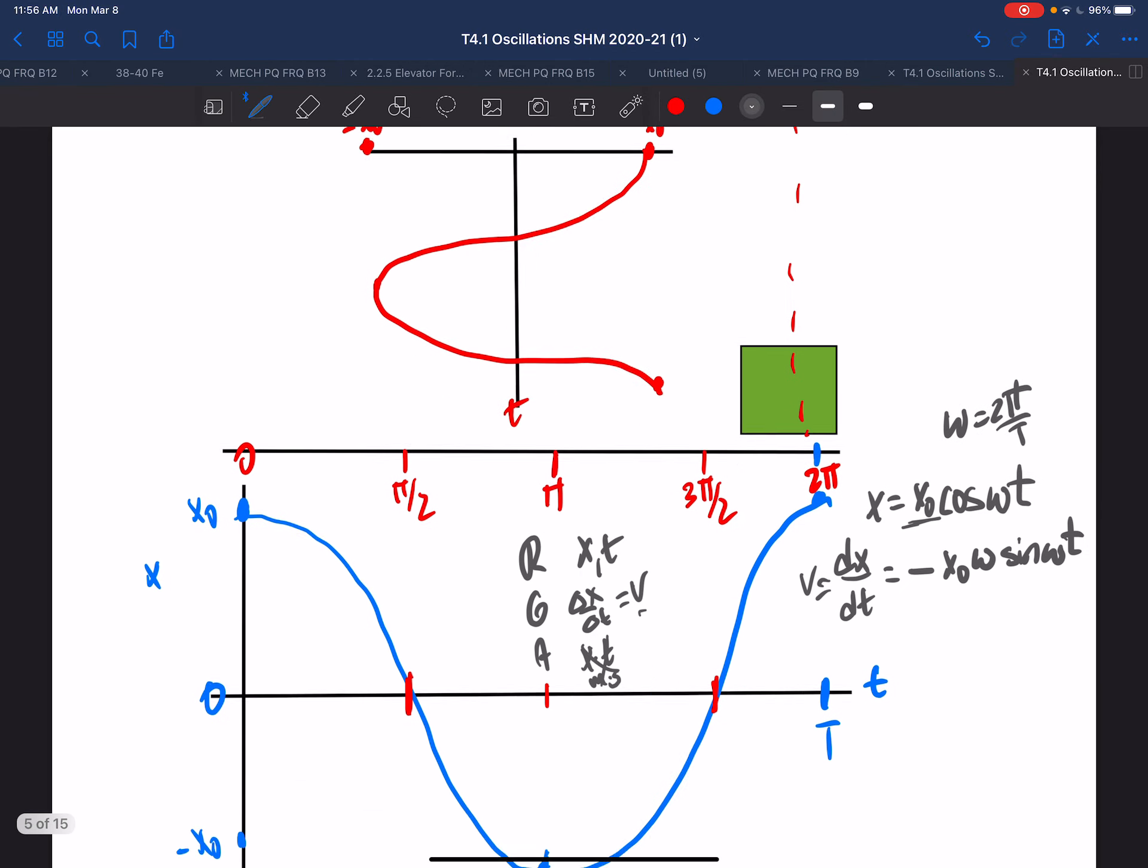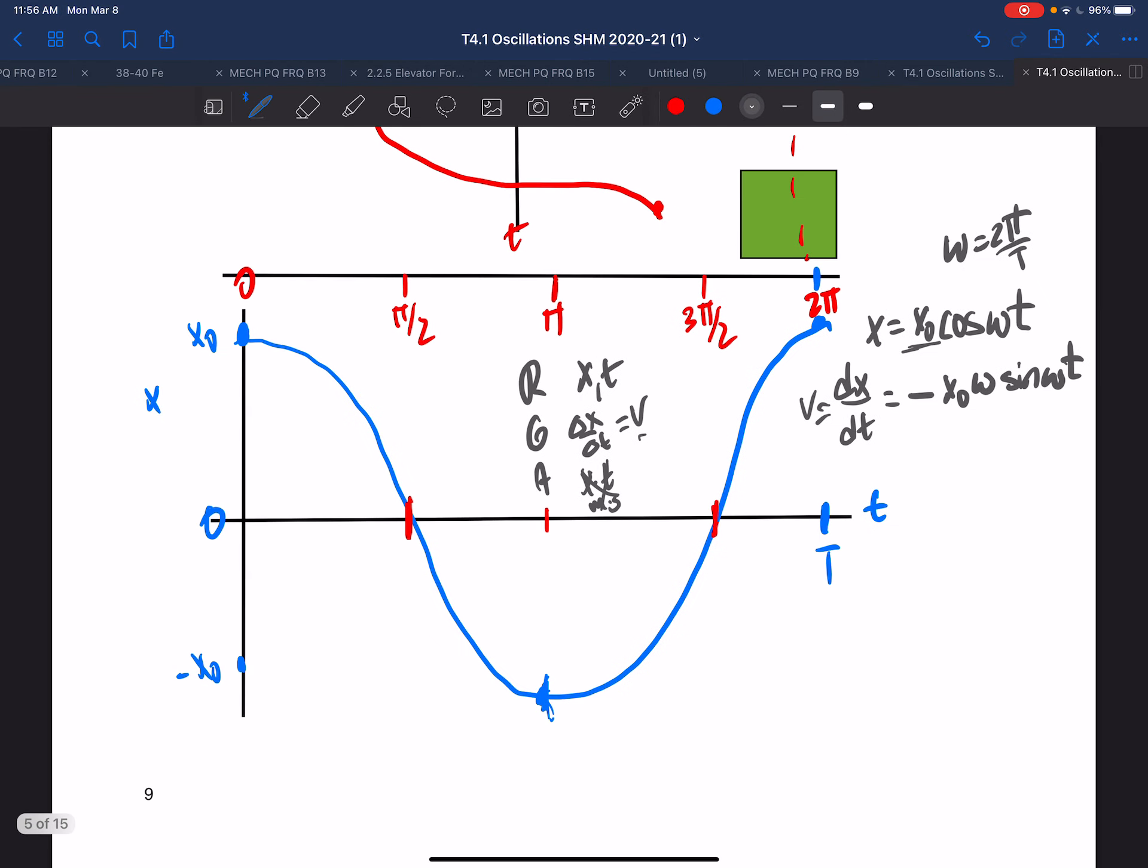Now, let's just go back to the position here and see if this is the case. The slope at time zero was zero, so the velocity equals zero. And at π over 2, the velocity is a negative maximum. And at π, the velocity is zero.